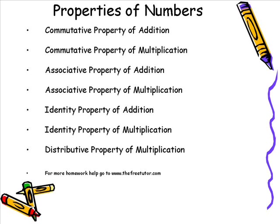Let's look at a few properties you should have mastered by the 6th grade level. First, the commutative property of addition and multiplication. Then the associative properties of addition and multiplication. Then the identity properties of addition and multiplication. And finally the distributive property of multiplication. All of these properties you should be familiar with as you move into 7th and 8th grade math and pre-algebra.